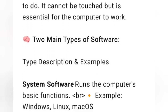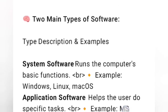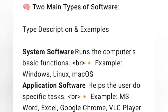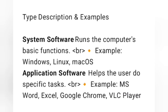There are two main types of software: system software and application software. System software runs the computer's basic functions — for example, Windows, Linux, Mac OS, etc.